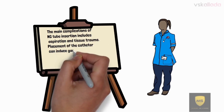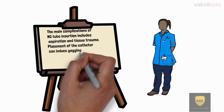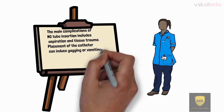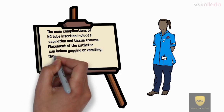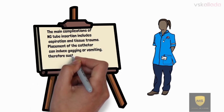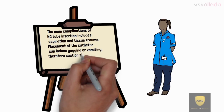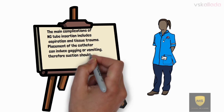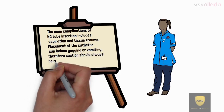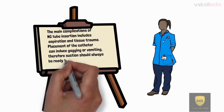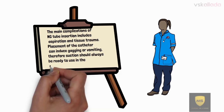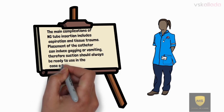The main complications are aspiration and tissue trauma. Placement of the catheter can induce gagging; therefore, suction should always be ready to use in case this happens.